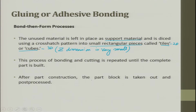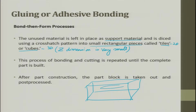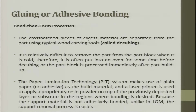After part construction is complete, the part block is taken out and post-processed. You will have a complete cube, possibly with some part information inside. You remove all the extra material and take the information out — that is your product. The cross-hatched excess material is separated from the part using a typical wood carving tool in a process called decubing. It is relatively difficult to remove the part when it is cold, so it is often put into an oven before decubing, to avoid uncontrolled cleavage cracking.